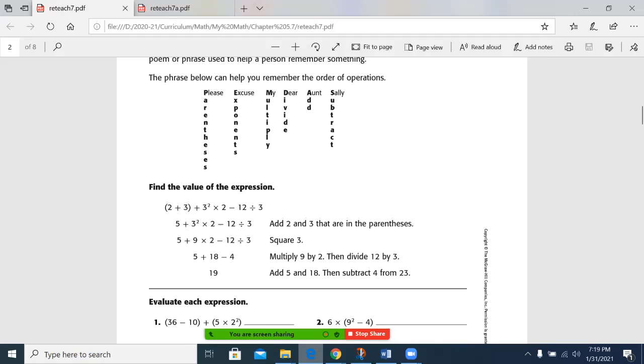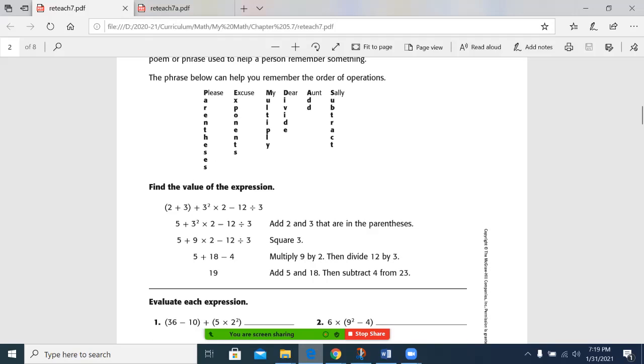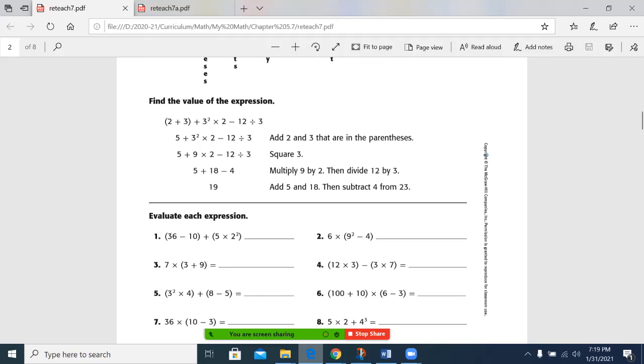Then I do exponents and 3 squared is 9. So now I have 5 plus 9 plus 12 times 2 minus 12 divided by 3. Then I go ahead and I do my multiplying and dividing. 9 times 2 is 18. So notice I didn't go 5 plus 9 and go 14 times 2. That's 5 plus 9 times 2, which is 18. And 12 divided by 3 is 4. So now my problem becomes 5 plus 18 minus 4.